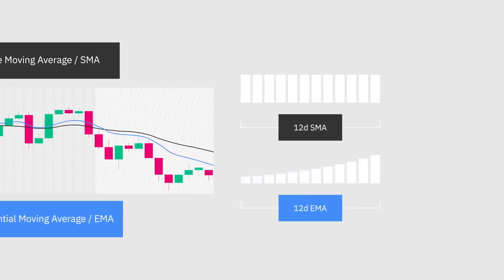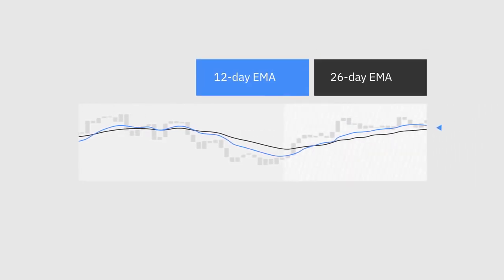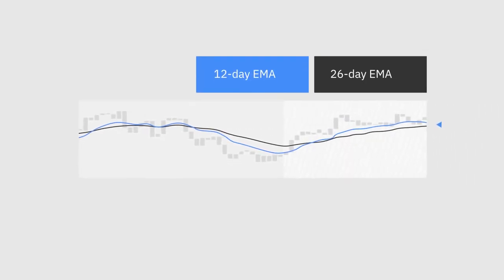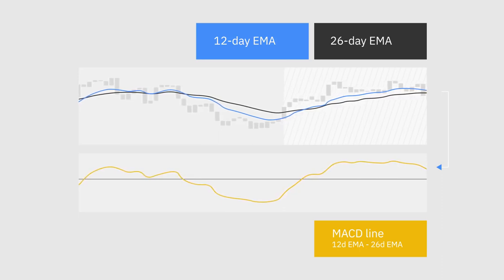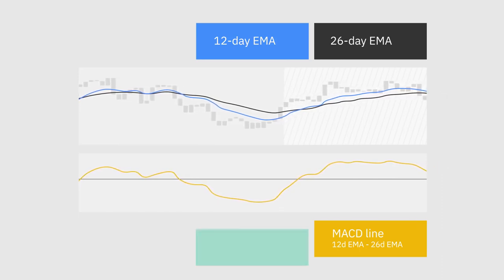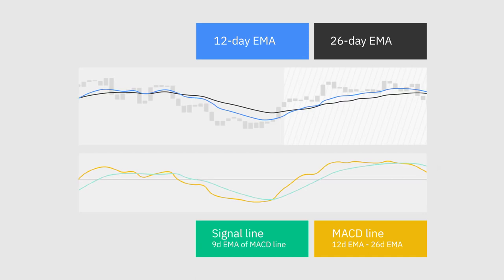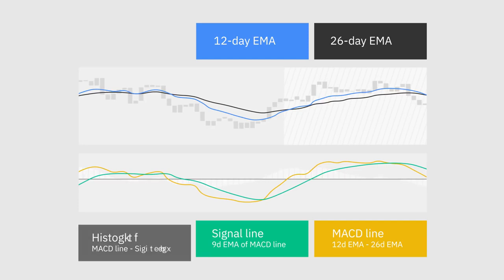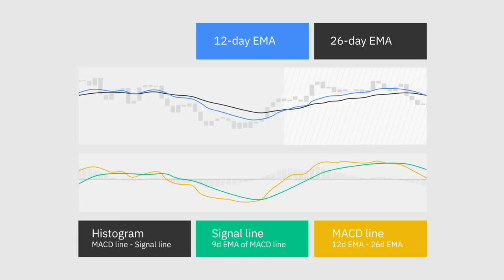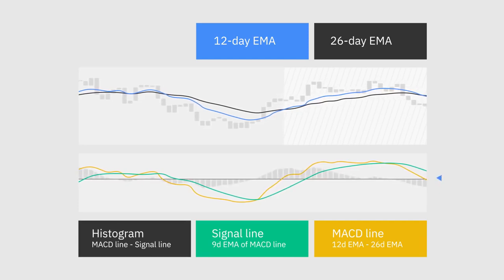The MACD indicator is calculated by subtracting two exponential moving averages to create the main MACD line. This line is then used to calculate another EMA referred to as the signal line. In addition to the MACD and signal lines, the MACD chart also has a histogram, which is generated based on the differences between those two lines.